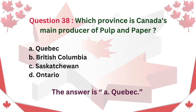Question 38. Which province is Canada's main producer of pulp and paper? A. Quebec B. British Columbia C. Saskatchewan D. Ontario. The answer is A. Quebec.